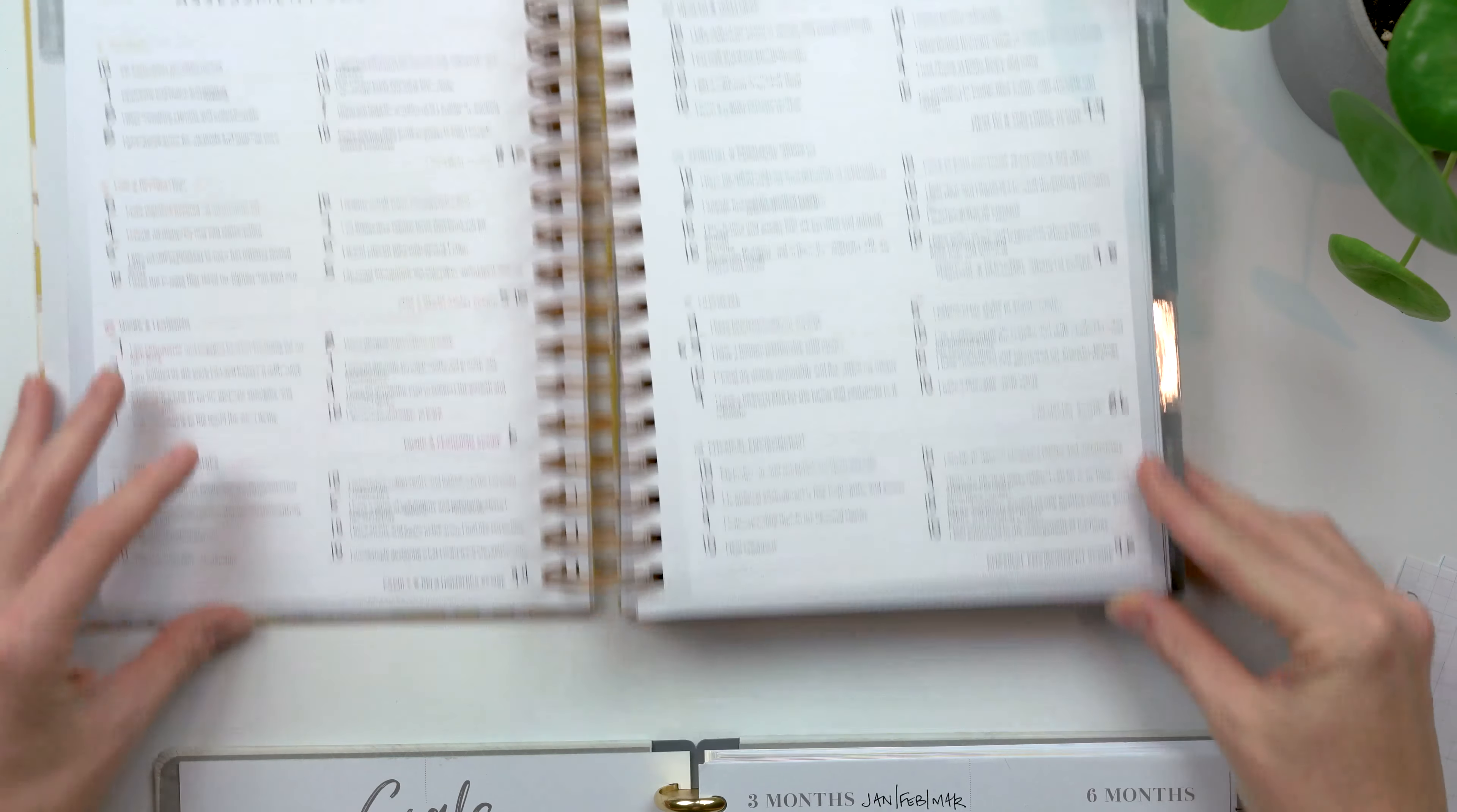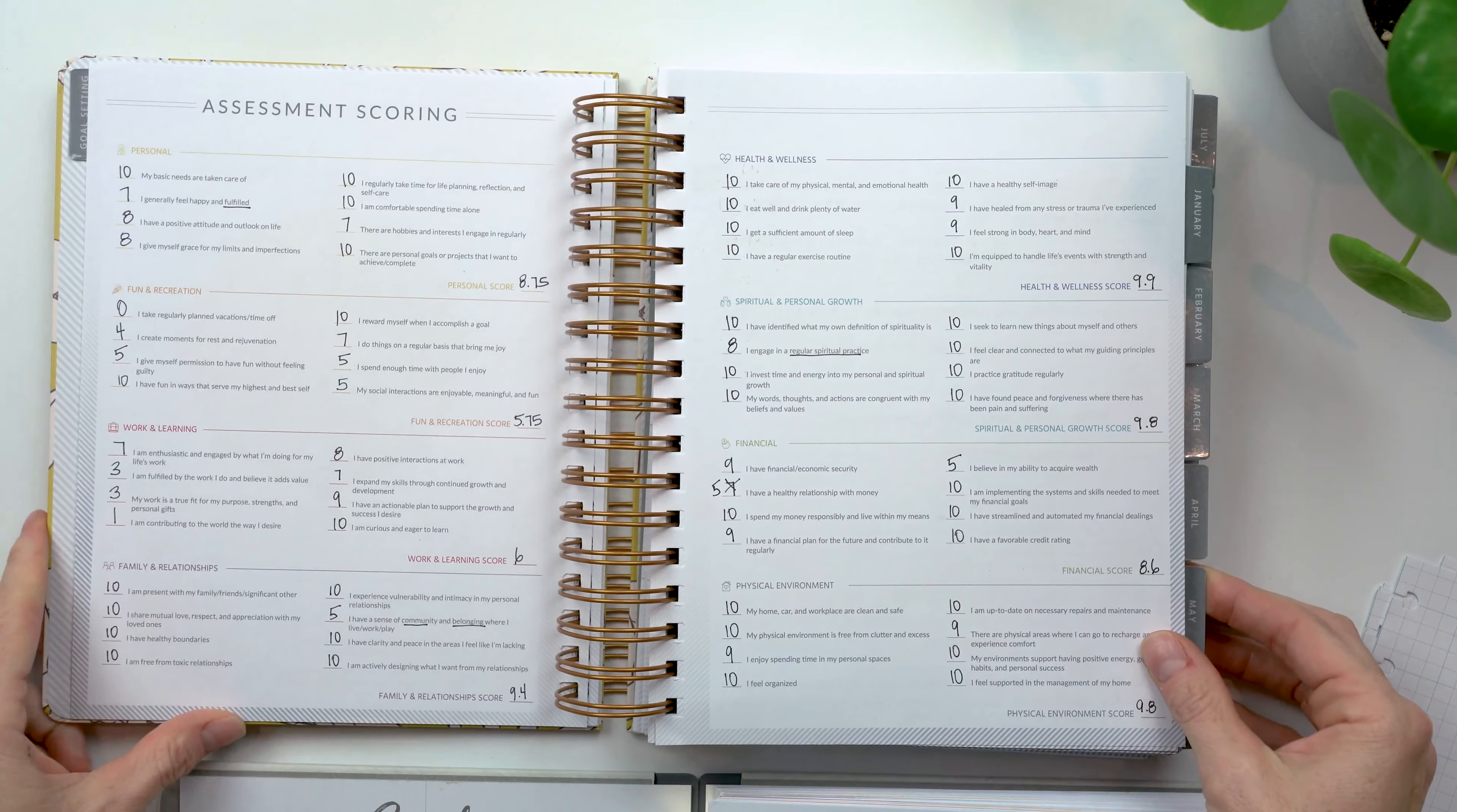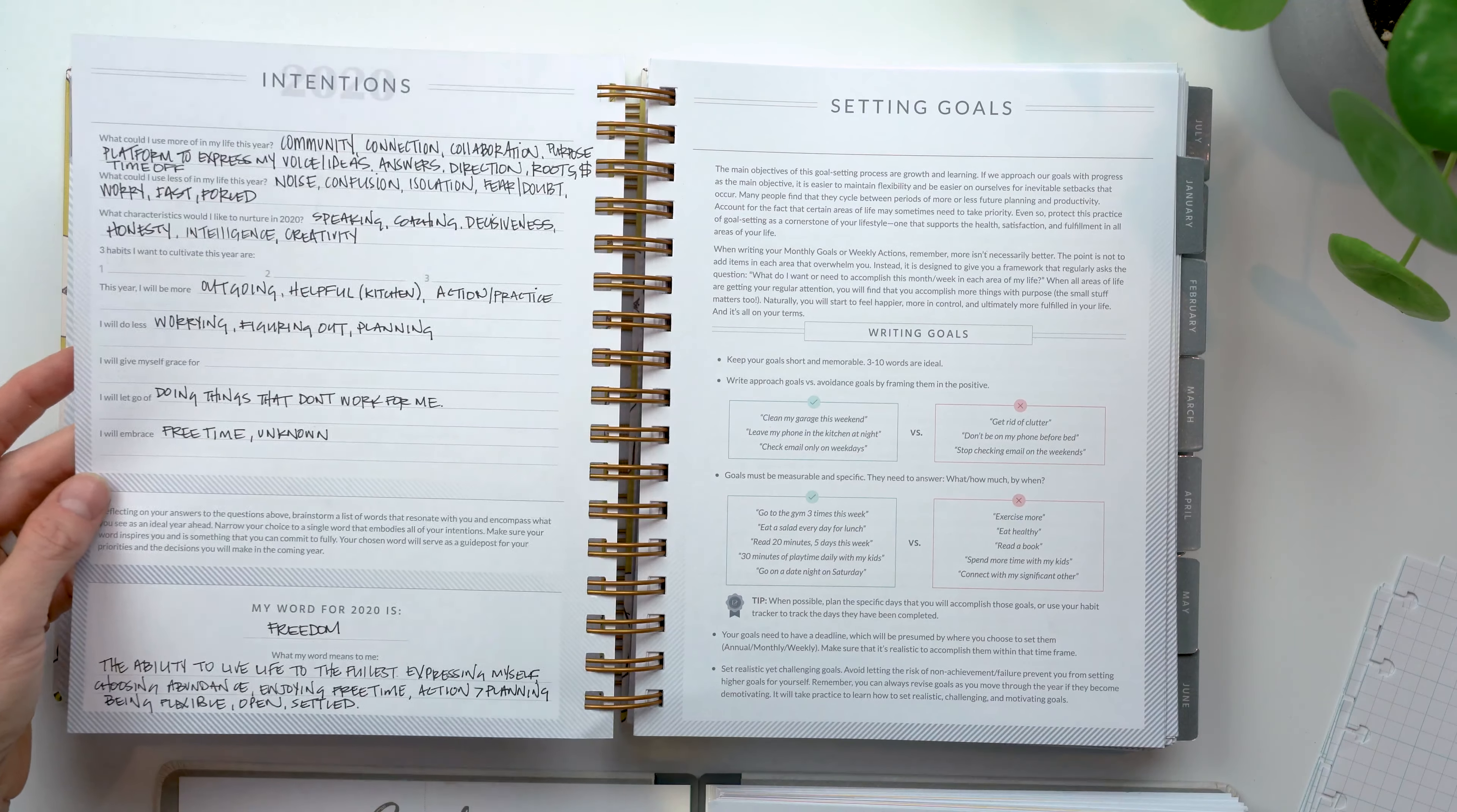If you want the super simplest version of goal setting, Inkwell Press weekly. If you need a little bit more, but not as extensive as some of the others that are out there, I think Moxie Life is good. Okay. So there is that. And you get a lot more instructions in here. So from assessing where you are, Moxie Life definitely does a better job compared to the weekly Inkwell Press.